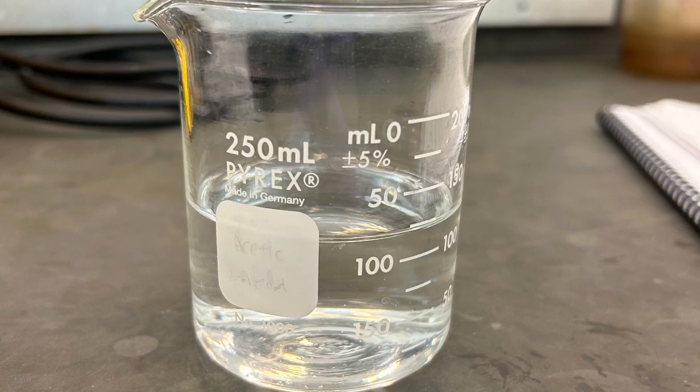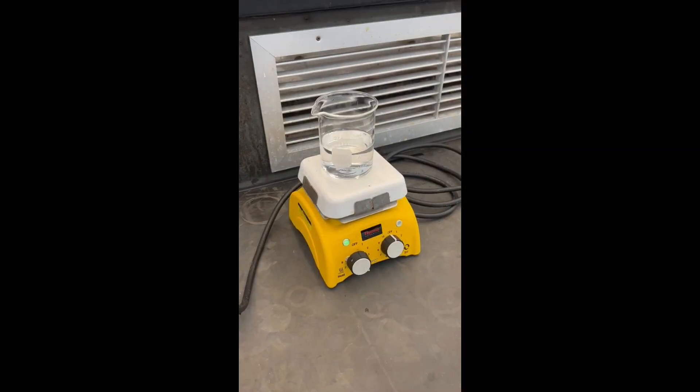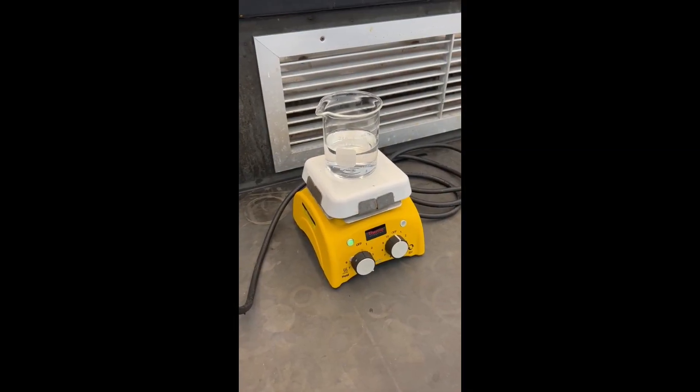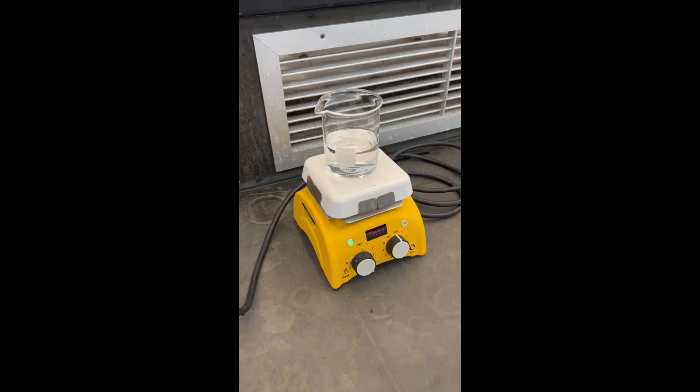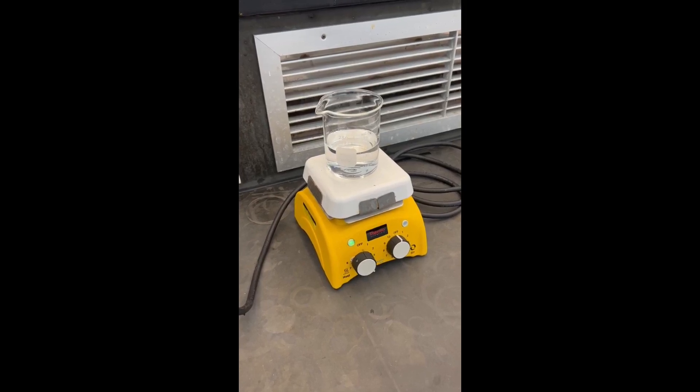To start the saponification of fat for Part B, prepare a hot water bath by filling up a 250 milliliter beaker with water and adding two to three boiling chips. Then put it on a hot plate to heat up until it boils, then put it on low heat to simmer. Keep an eye on it so the water does not splash too much.